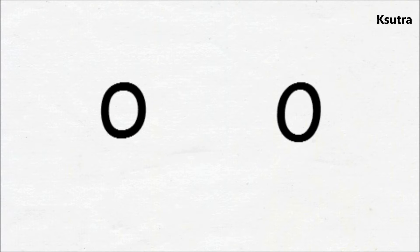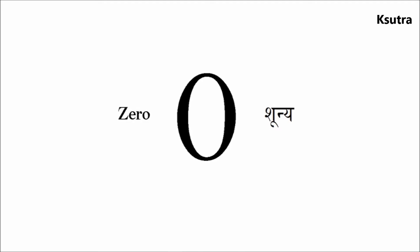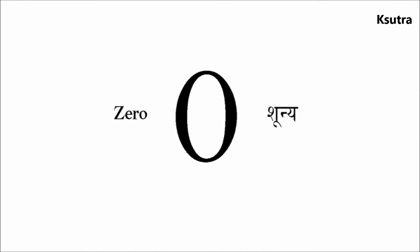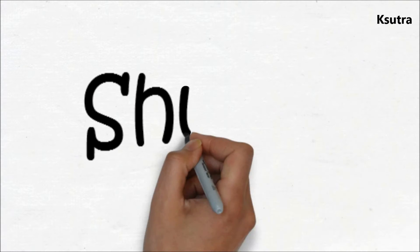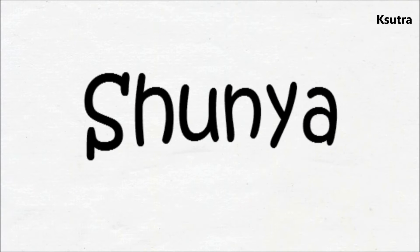The modern numeral zero is normally written as a circle or rectangle. The word zero comes through the Arabic literal translation of the Sanskrit 'sunyaya'; the actual word zero came from Italy.